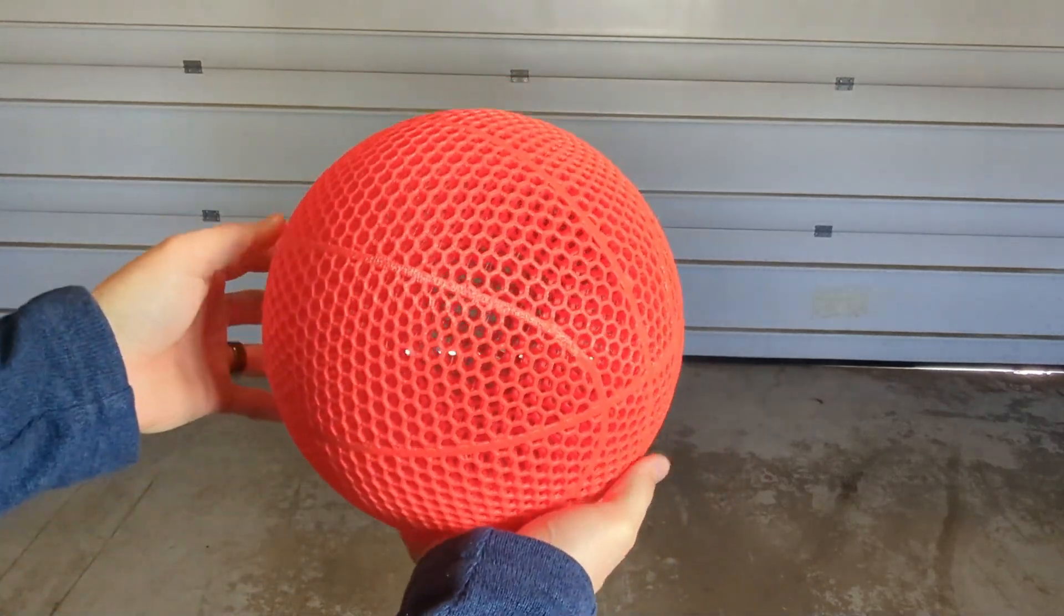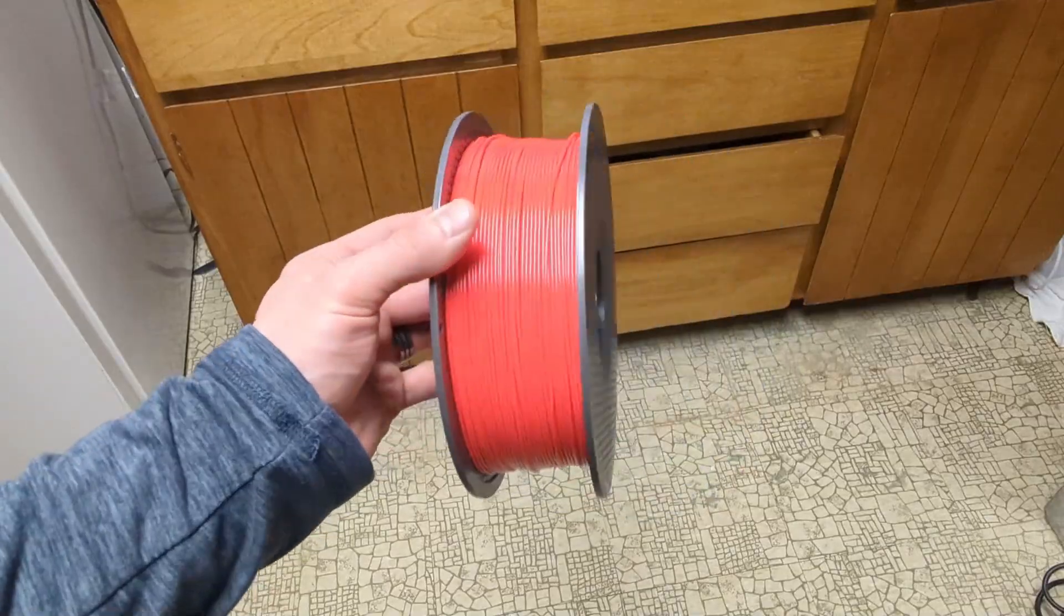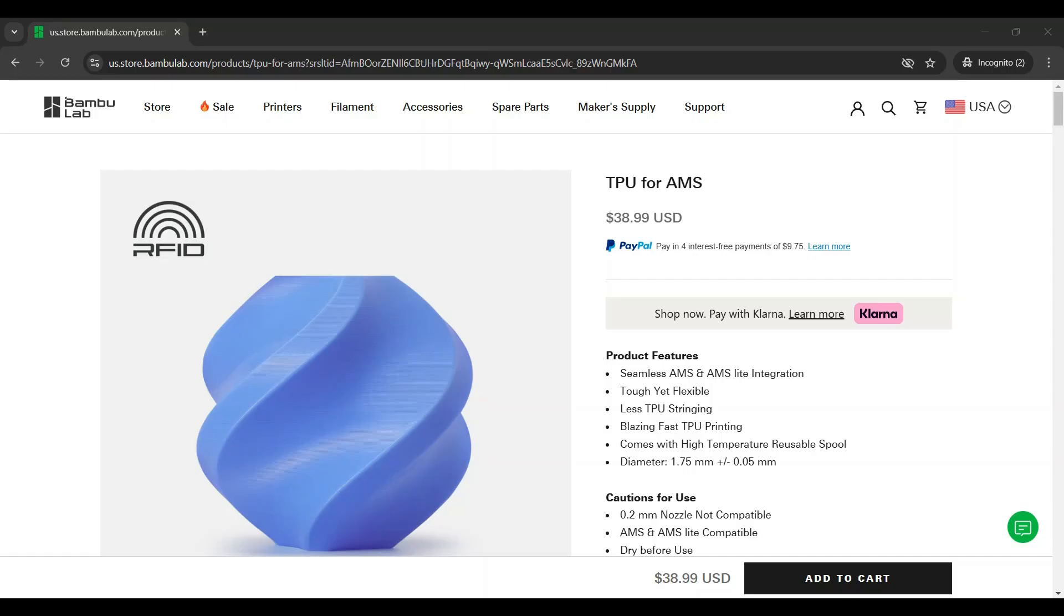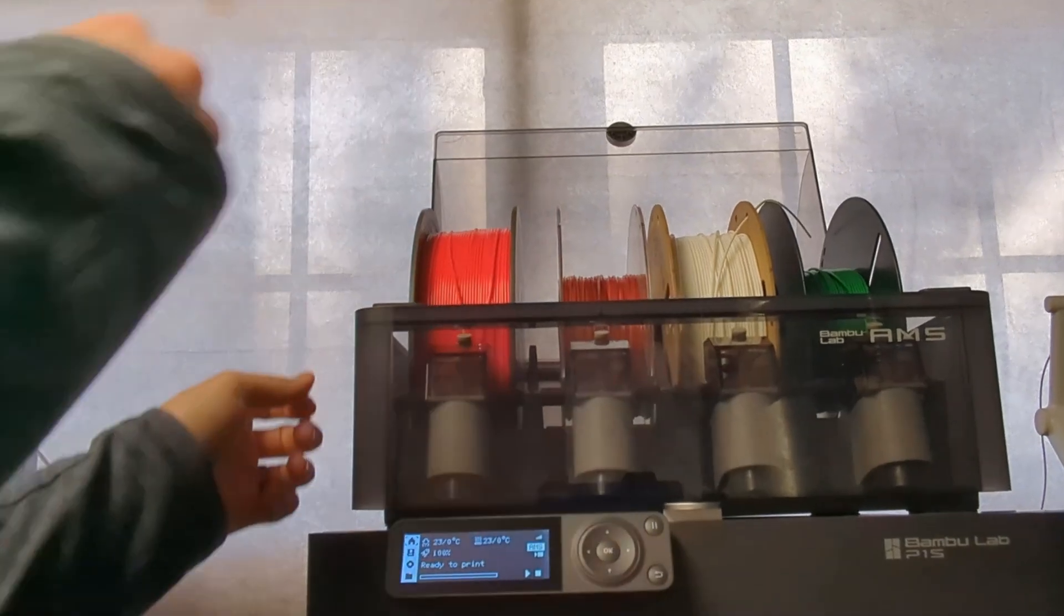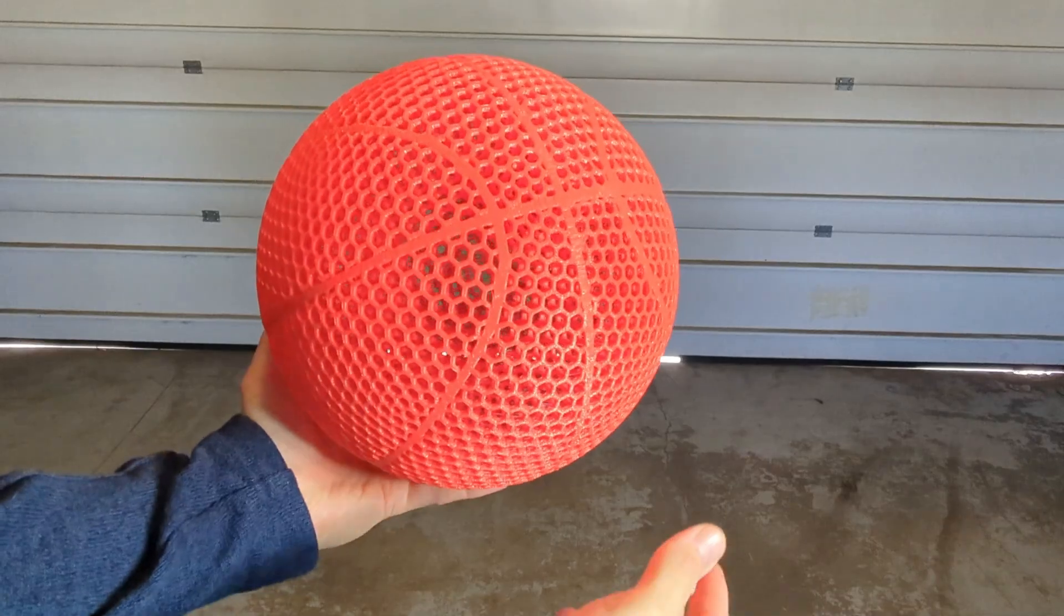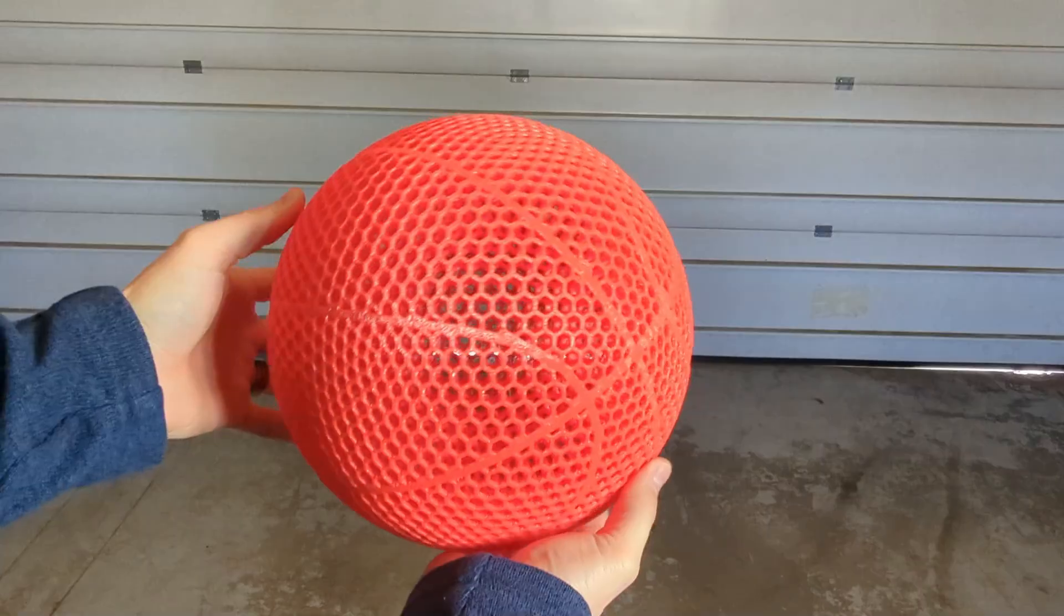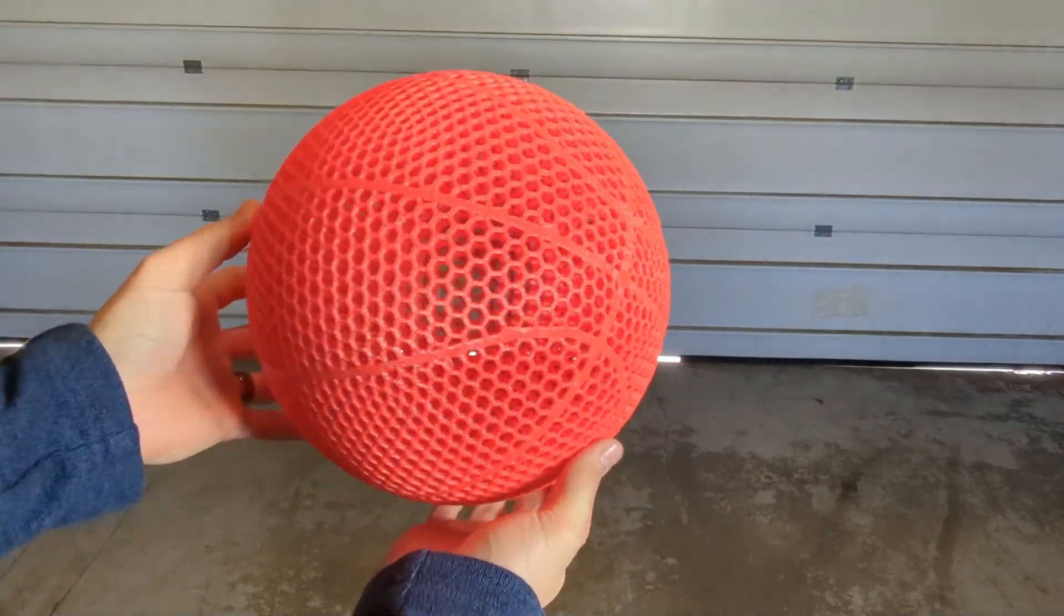In this video I'm going to be answering two important questions. The first question I have is, does this new TPU from Bamboo Labs actually work with the AMS like they say it does online? And my second question is, is this a good filament option for making airless basketballs?